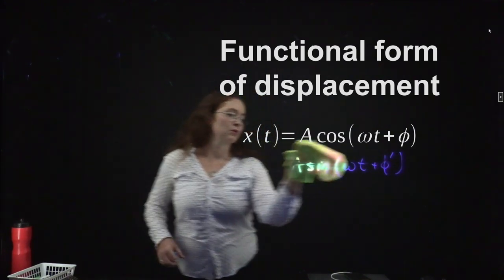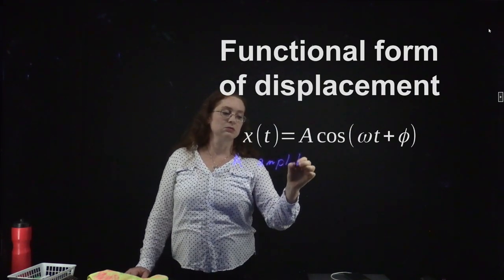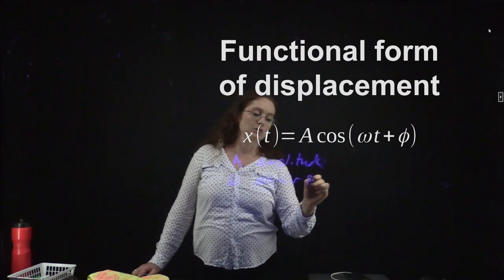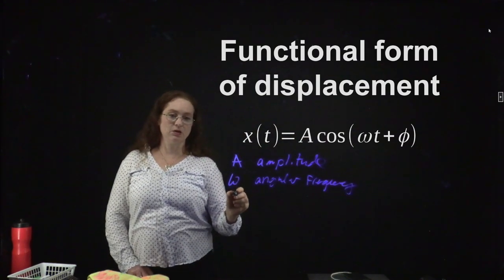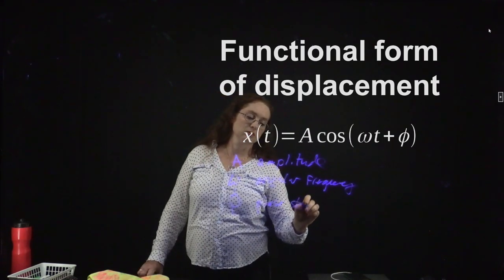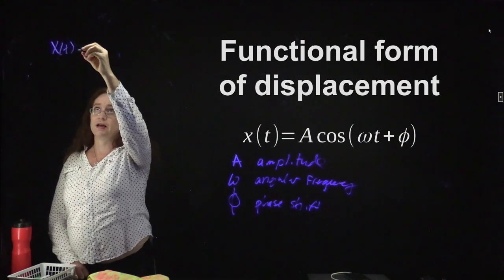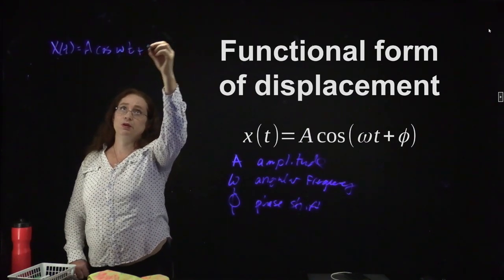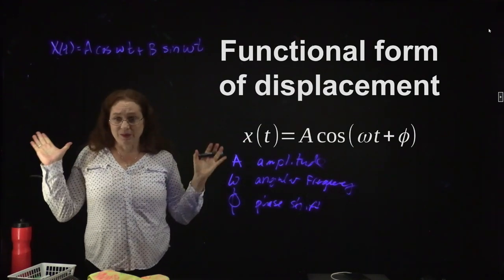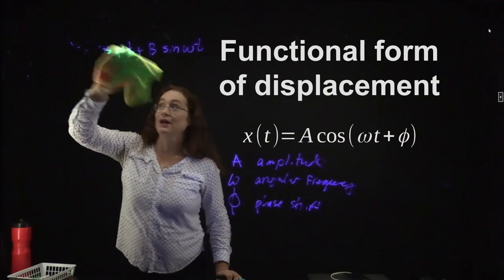We have special words for each of these variables: A is the amplitude, omega is the angular frequency, t is the time, and phi is the phase shift. You could also write the displacement as A cosine(ωt) + B sine(ωt). There will be times I would use that form instead. Remember: a good physicist is a lazy physicist — sometimes this is the more useful form and I'll choose whichever means I don't have to work any harder than I have to.